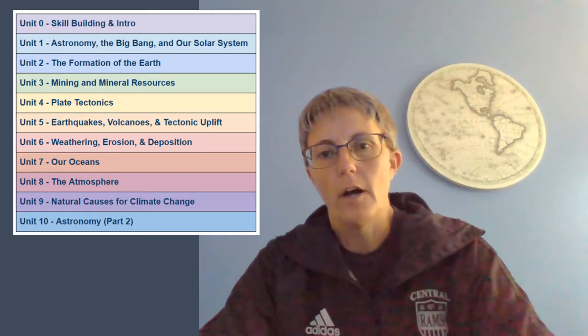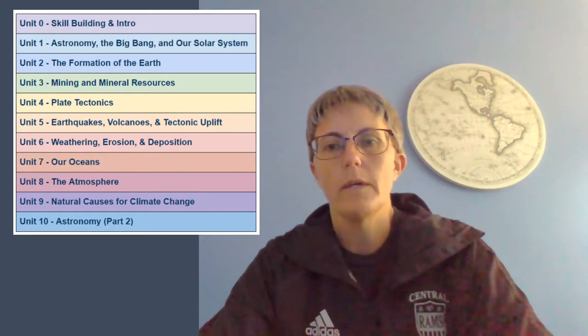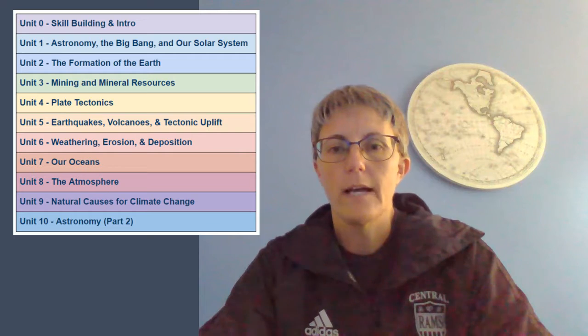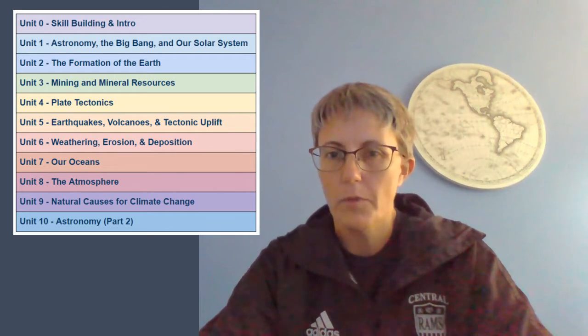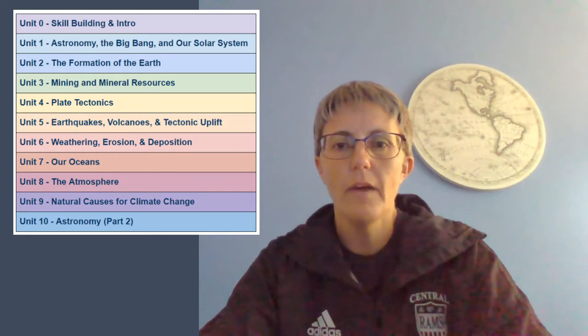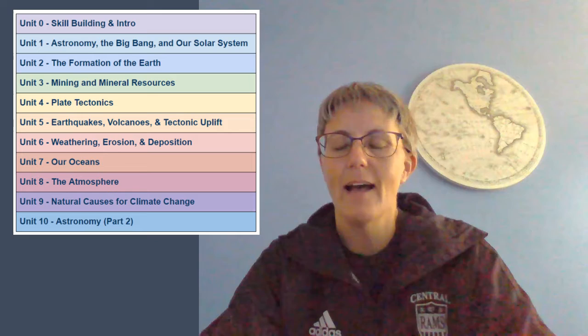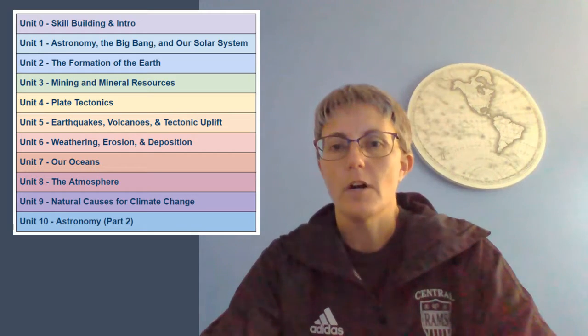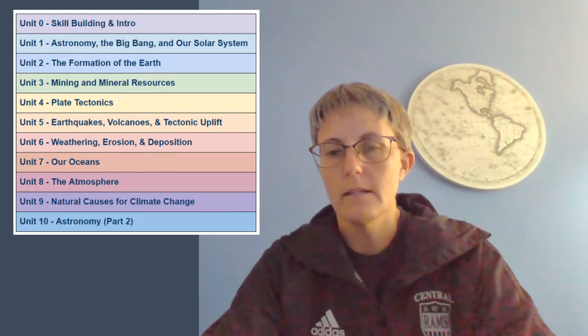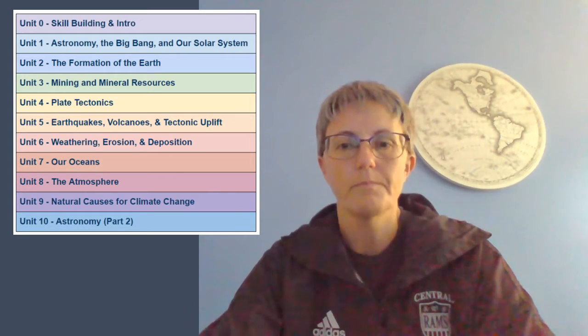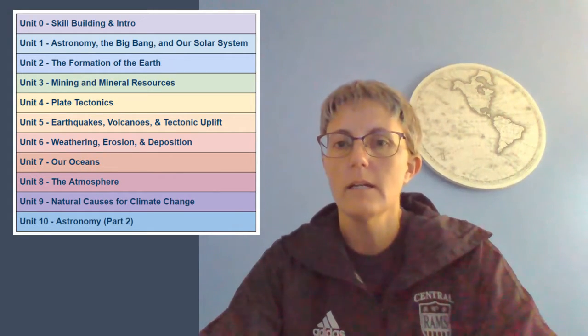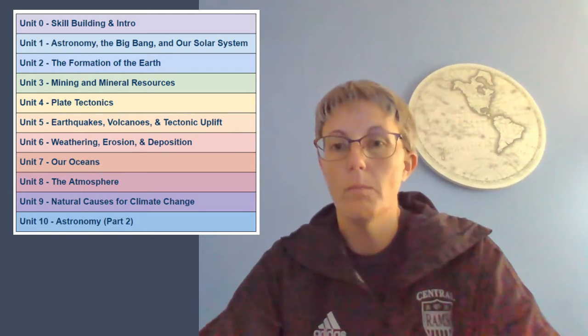We are currently wrapping up the first part of unit one. We started our experience in earth science looking at a couple of skills things — we had a short unit zero where we looked at constructing scientific explanations and asking good questions, both open and closed-ended. Then we moved into our content. Unit one is on astronomy, more about the formation of everything. We've started with the big bang, looking at the evidence that supports the big bang theory as the formation of the universe and talked about what scientists have seen and how they reason that to build the big bang theory, and some questions that are still outstanding about what happened before and what might happen in the future.